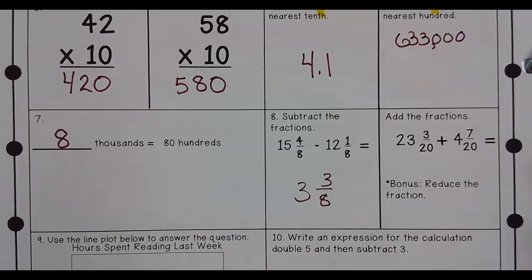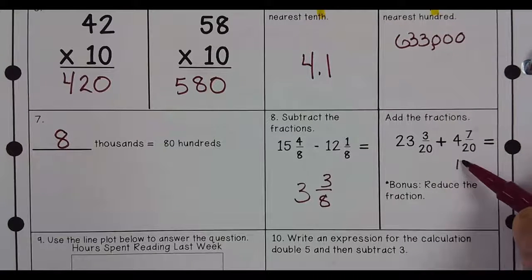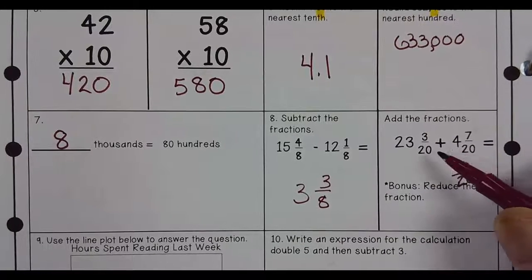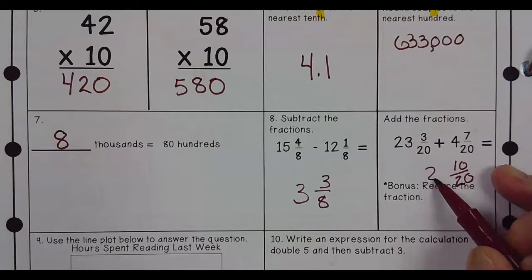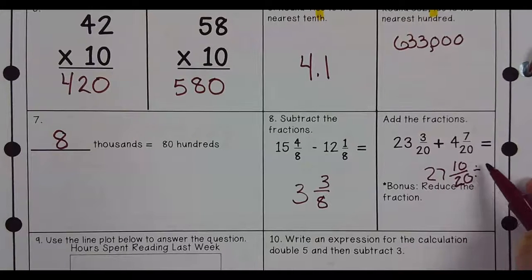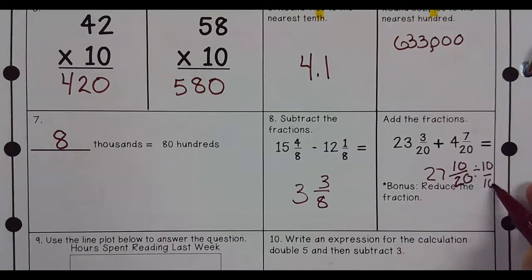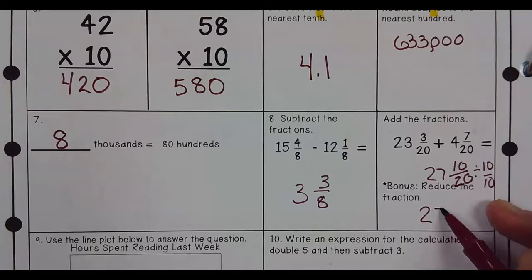Add the fractions. 7 and 3 is 10. 10 over 20. 23 plus 4 is 27. You divide the top and the bottom by 10. So I have 27 and 1 half.